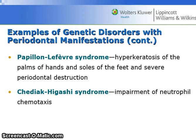Additional examples of genetic disorders are Papillon-Lefevre syndrome, which shows hyperkeratosis of the palms of the hands and soles of the feet as well as severe periodontal destruction, and Chediak-Higashi syndrome, which is impairment of neutrophil chemotaxis. These may be on your boards, so keep them in mind.